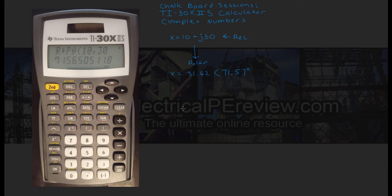Let's draw our triangle, showing both polar and rectangular. We've got a vector with magnitude 31.62. That has a real component of 10, an imaginary component of plus j30, and an angle of 71.57.